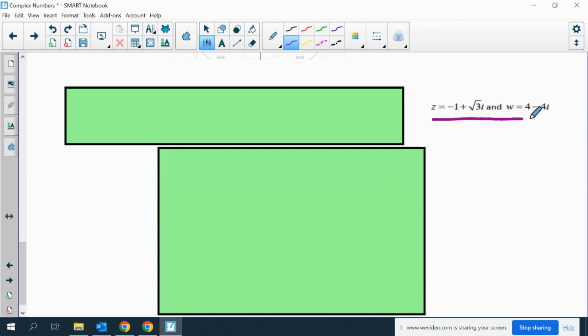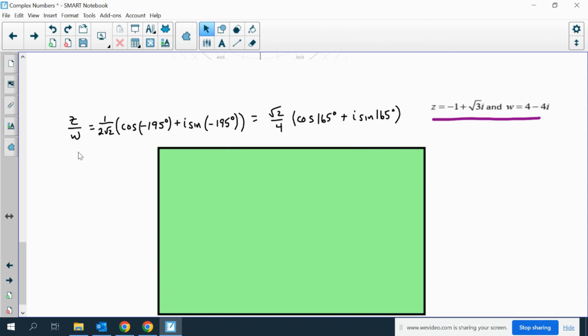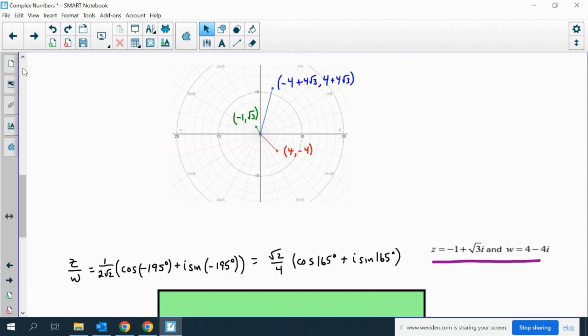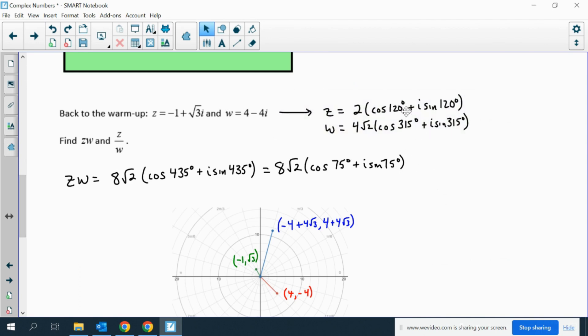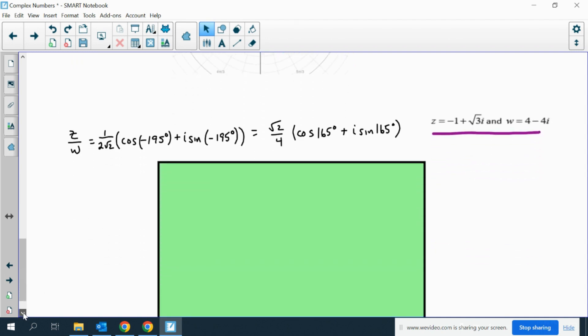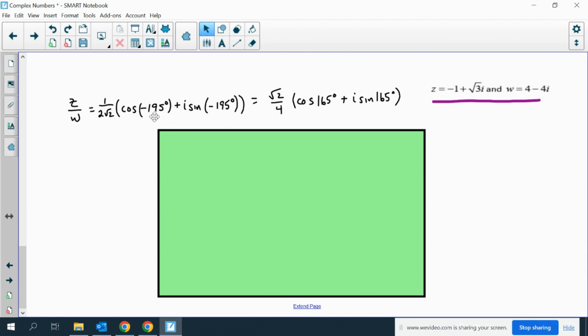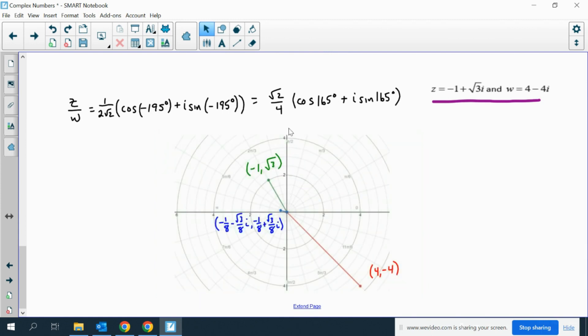Finally, I just rewrote z and w so you can see it without me having to scroll up a bunch. If I divide them, if I do 2 divided by 4 root 2, I get 1 over 2 root 2, which is the same thing as root 2 over 4. And then if I subtract the angles, I get negative 195, which is positive 165 degrees. Here's the same thing with the picture. Notice that you end up, when you divide, getting a pretty small length away from the radius. And you end up with the same point that you got from the original warm-up problem.